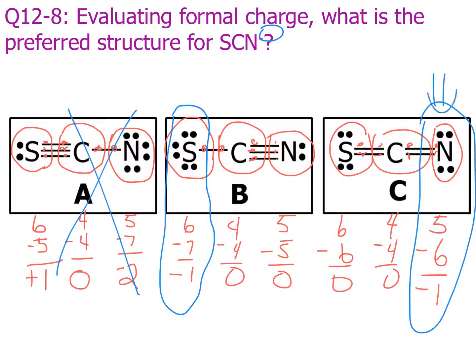The answer is we want nitrogen, because it is more electronegative. So, by formal charge, the best structure is structure C, with two double bonds.